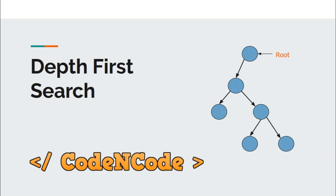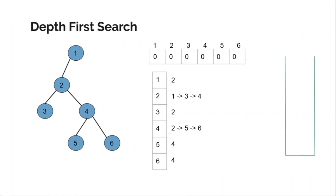Hello guys, this is Code and Code, and this is the second lecture of the Graph Theory Part One series. In this lecture we are going to talk about Depth First Search. As I have already mentioned, there are two different traversal techniques: Depth First Search and Breadth First Search. So in this lecture we are going to talk about Depth First Search.